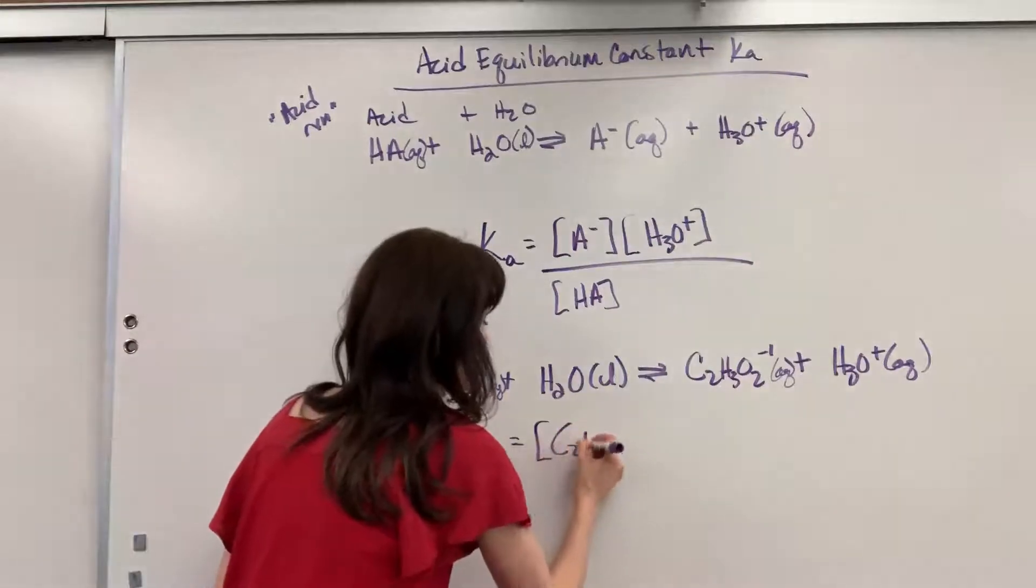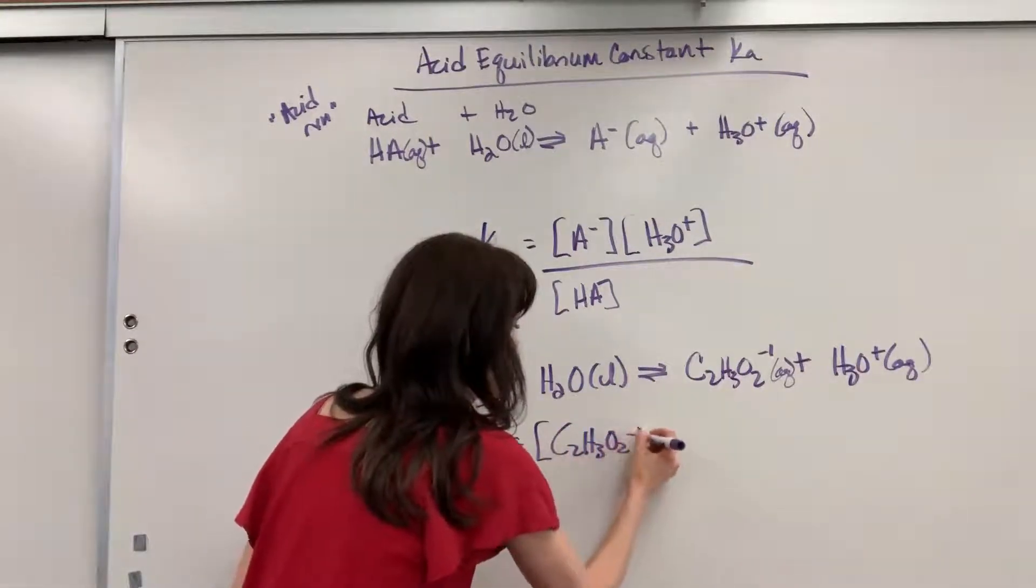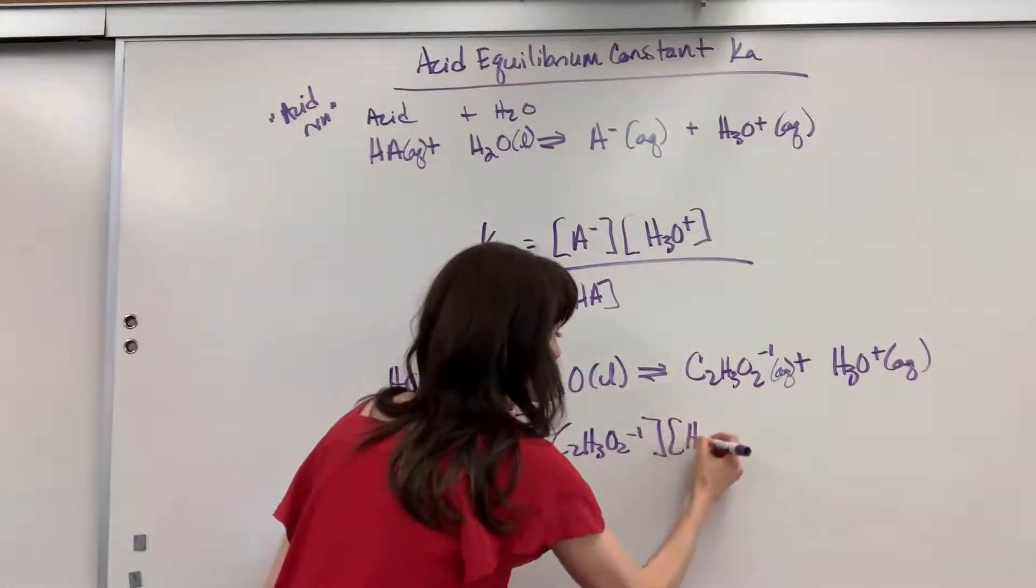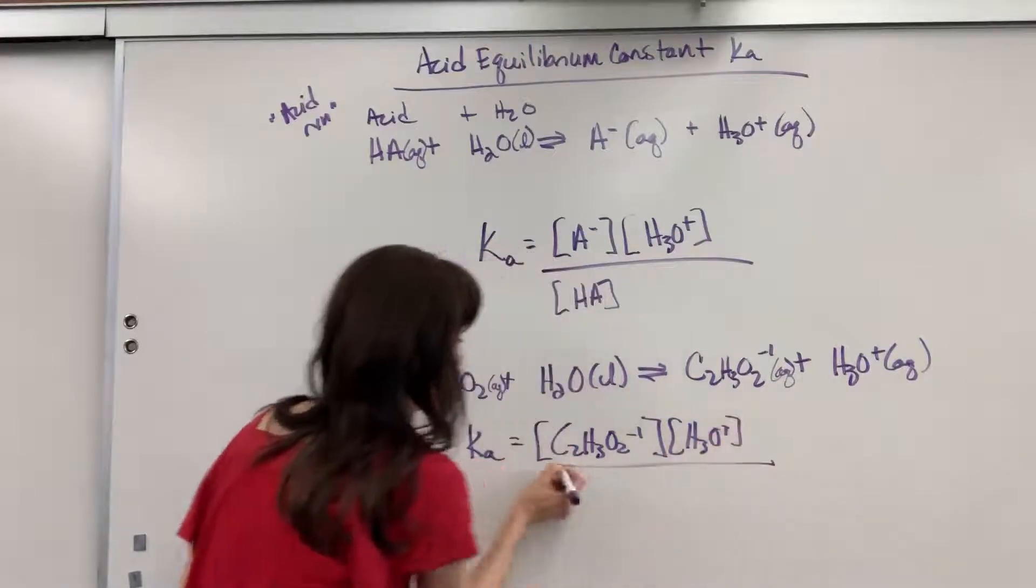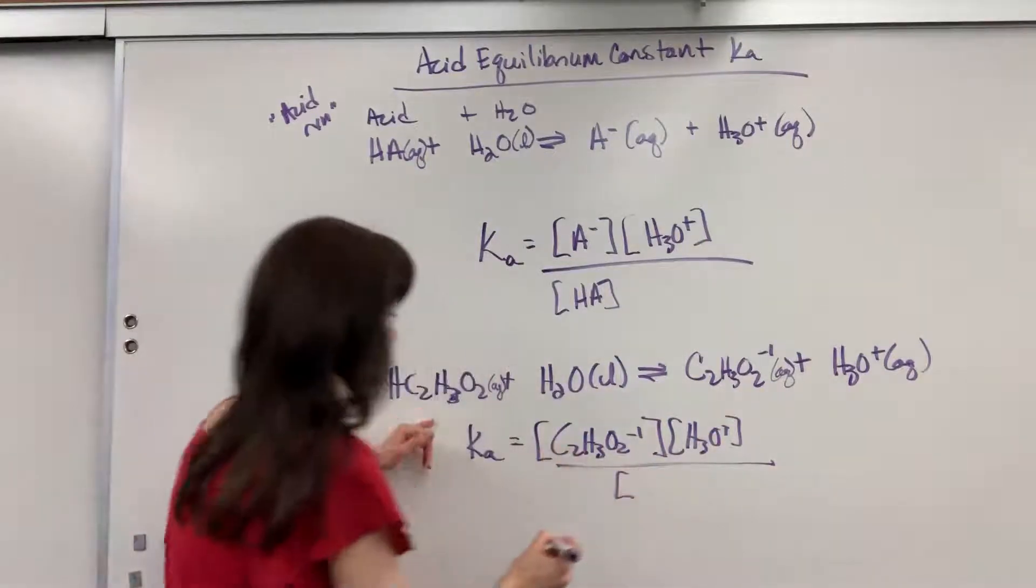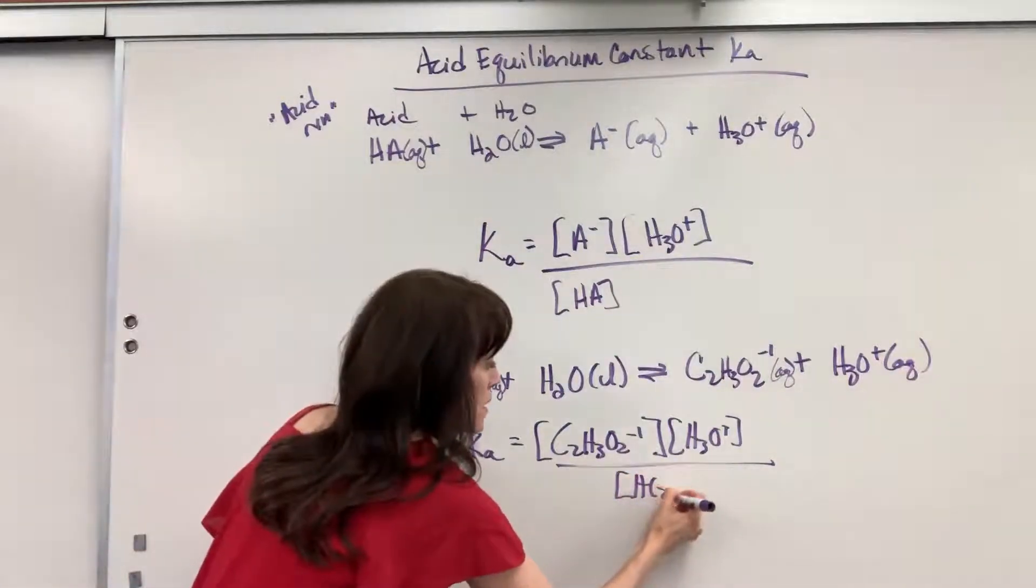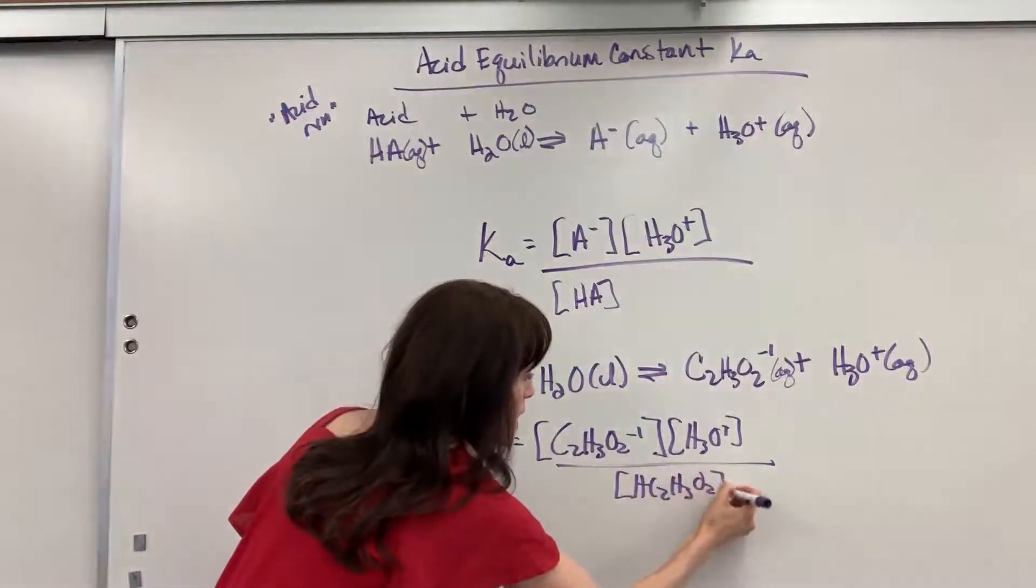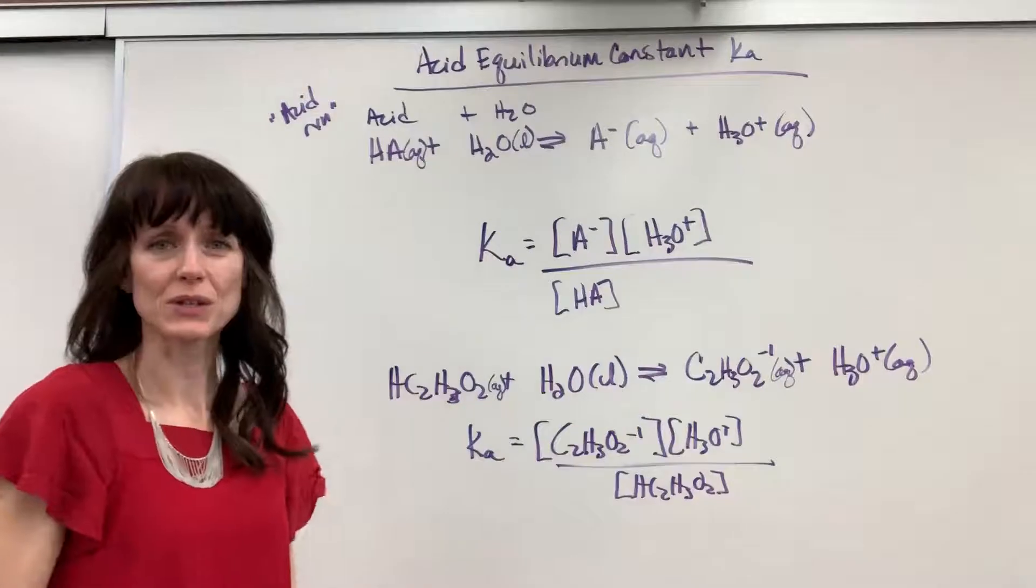and that will be products. It will be the acetate ion times hydronium divided by my reactants, which is going to be the acetic acid. And water is a liquid, so we don't include it.